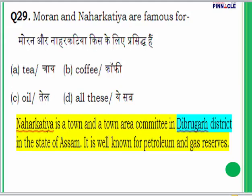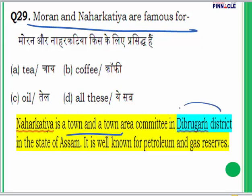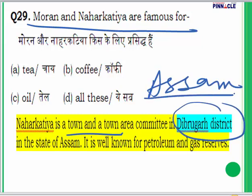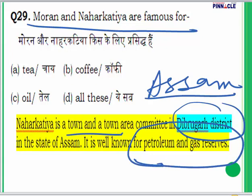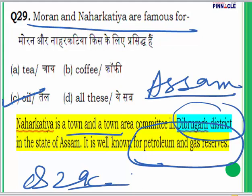Question 29: Moran and Naharkatia are famous for what? Naharkatia is a town area in Dibrugarh district, which is in Assam, and it is very well known for petroleum and gas reserves. Both these places are famous for oil. The answer to question 29 is C.